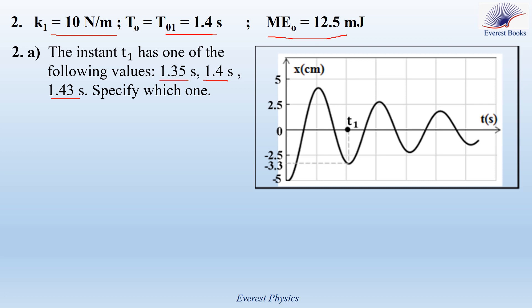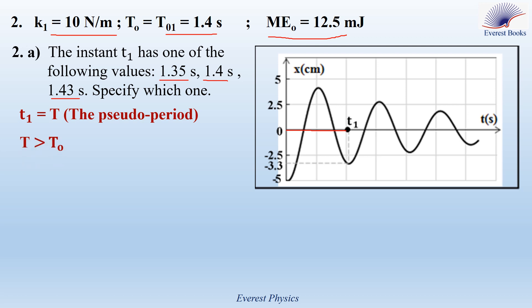Examining the figure, T1 is the time taken for one complete oscillation, which is the pseudo-period of the damped oscillation. The pseudo-period must be greater than the natural period of 1.4 seconds. Therefore, we must choose 1.43 seconds. So T1 equals 1.43 seconds.